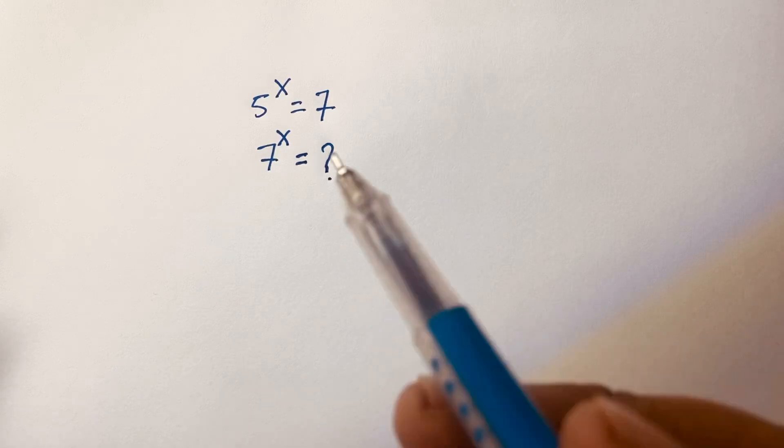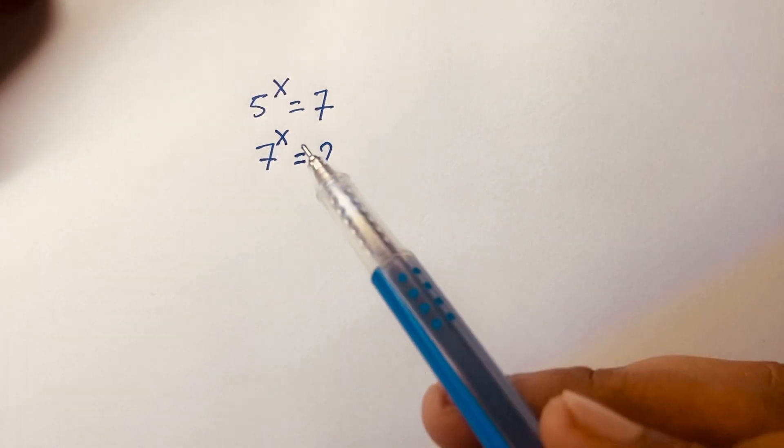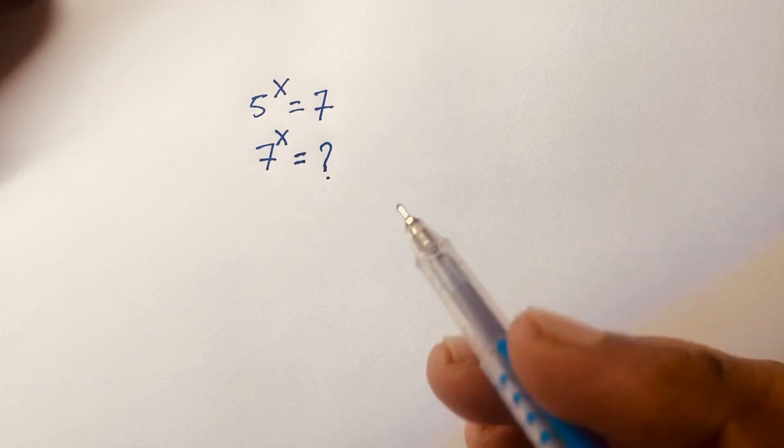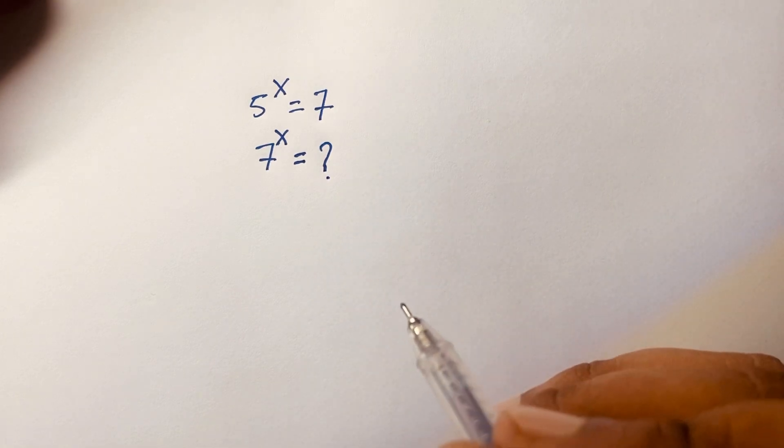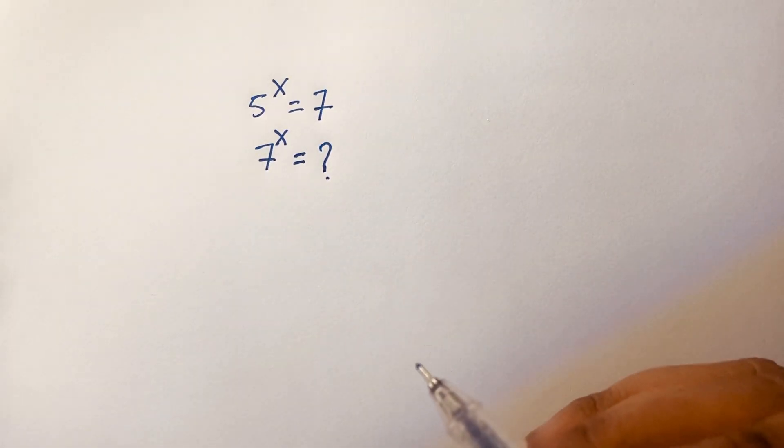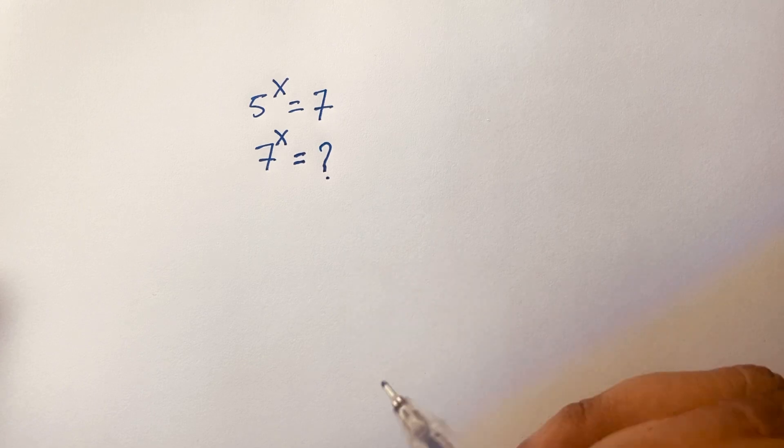Hello everyone, in this video we have solved this Math Olympiad question: 5 to the power x is equal to 7. 7 to the power x is equal to what? How to solve this question? It is easy math and interesting math.